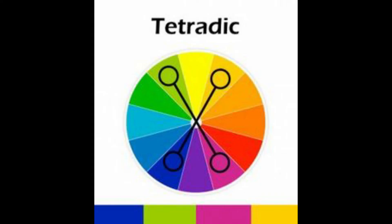Tetrad scheme of colors: a tetrad is formed by four colors equidistant on the color wheel. Examples include: red, orange, purple, yellow, blue, green; and yellow-orange, red, green, blue, purple.